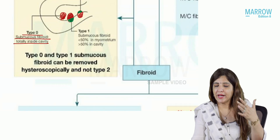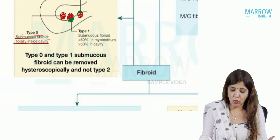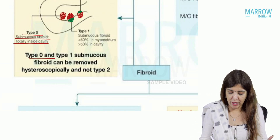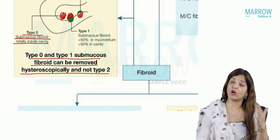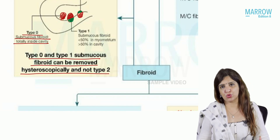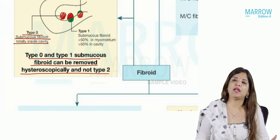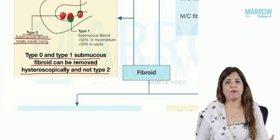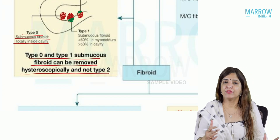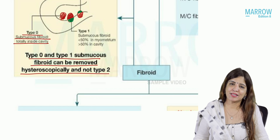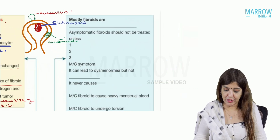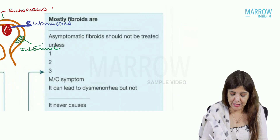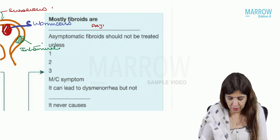We divide submucous fibroids this way because Type 0 and Type 1 fibroid can be removed hysteroscopically, whereas Type 2 fibroid cannot be removed hysteroscopically — for that you will have to go for laparoscopic myomectomy. That is why we divide it into three categories: Type 0, Type 1, and Type 2. Mostly, fibroids are asymptomatic.